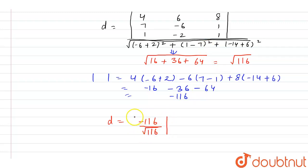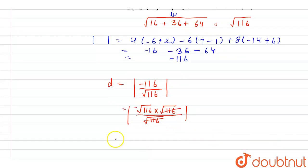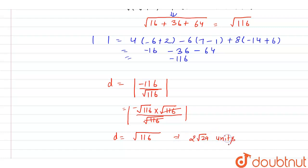Therefore the value of d = |-116| / √116. Since distance is always positive, we take the mod. We can write 116 as √116 × √116, so the √116 cancels, giving d = √116 = 2√29 units. Hence the final answer is that the shortest distance D is 2√29 units.